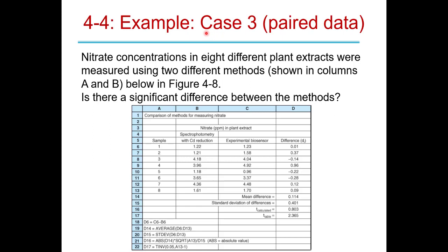Now for Case 3, the paired t-test. In this example, we're measuring nitrate concentration in different plant extracts using two methods: a spectrophotometry method with cadmium reduction, and a new experimental biosensor. We want to know if there is a significant difference between the methods across eight different plant samples.